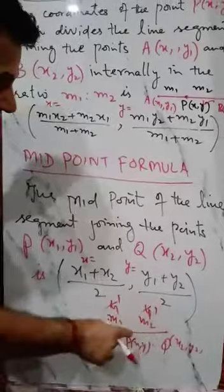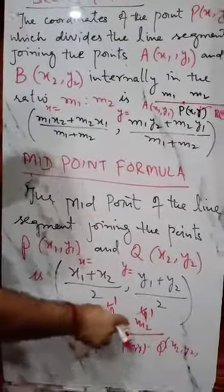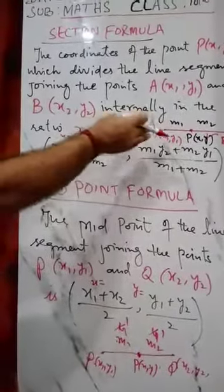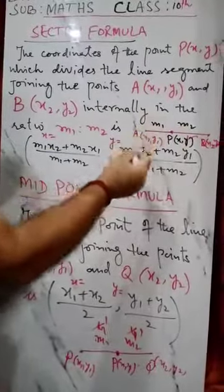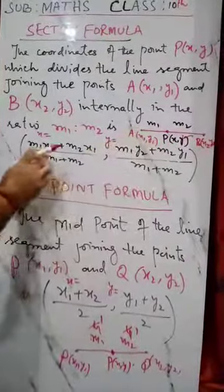For midpoint formula, when the point lies in the mid of the line segment, you directly use this formula: x1 plus x2 upon 2 and y1 plus y2 upon 2. Only when this is in the mid. Or you can use the section formula when it is just like 1 to 2, 3 to 5, 6 to 7.